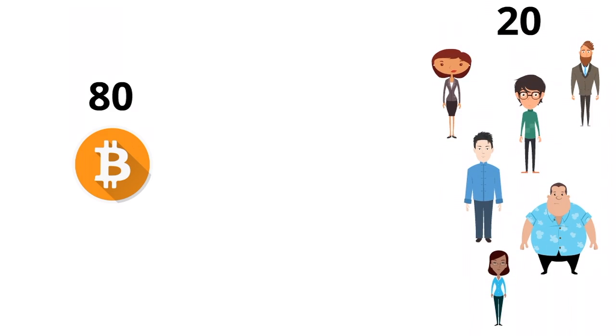On the second day, there were 80 Bitcoins, and again, only 20 people who wanted to buy Bitcoin. So they each got one Bitcoin for $1 each. The same thing happened on the third, fourth, and fifth day.